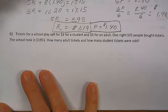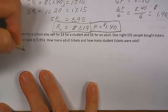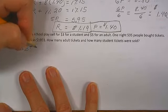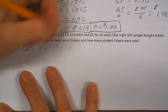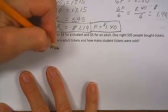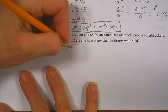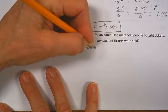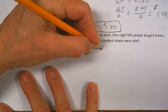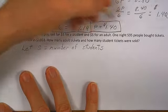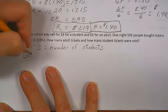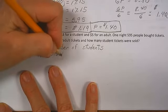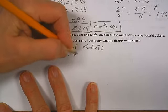Well, let's see. First, we define our variables. Let S equal number of students and we're going to let A equal the number of adults.